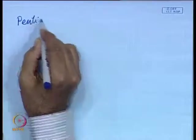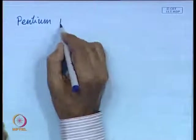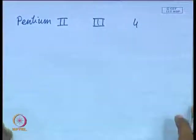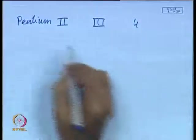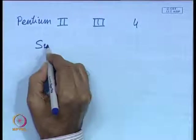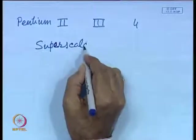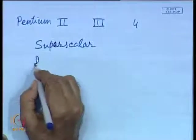Hello and welcome to today's lecture on case studies. We shall continue our discussion on the evolution of Intel processors. In the last couple of lectures, we have discussed primarily the Pentium series of processors starting with Pentium 2, then Pentium 3 and Pentium 4. We have seen that these processors are essentially superscalar and deeply pipelined.